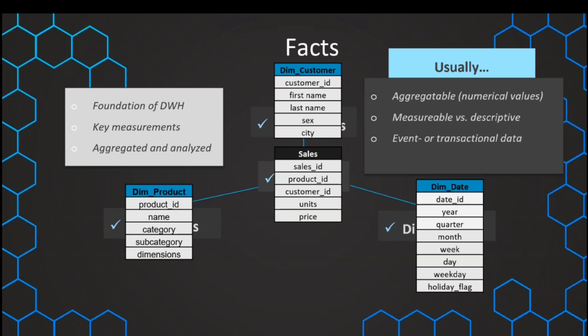But oftentimes, they are event or transactional based. We have one sale, and this sale is basically like a transaction. Or we have another event, so something is happening, and then this is also a sign that this can be a fact. A sale can also be like an event that is happening at a specific time or a specific date. And therefore, oftentimes, in a fact table, we also have some kind of date or time column included.